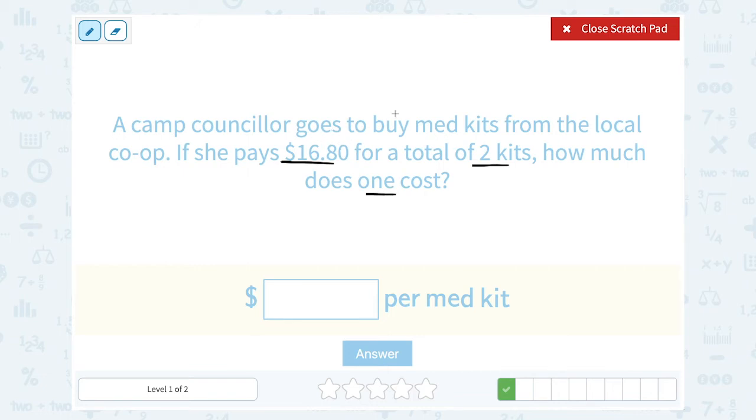Since it's a decimal amount, I'm going to set it up this way, $16.80 divided by two. I'm going to line up my decimal point right above the decimal point here. How many times does two go into 16?